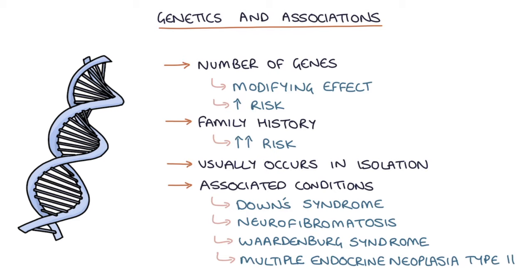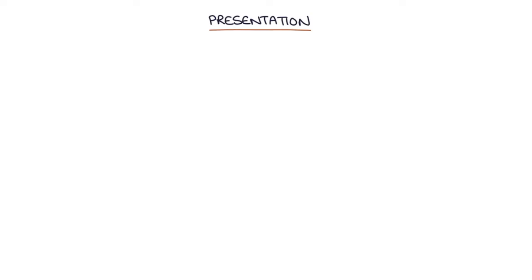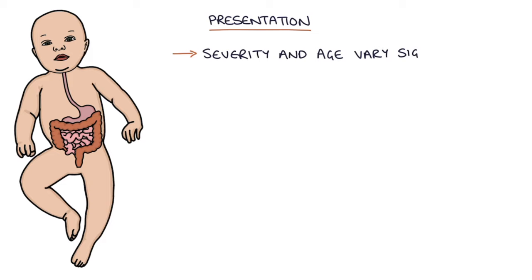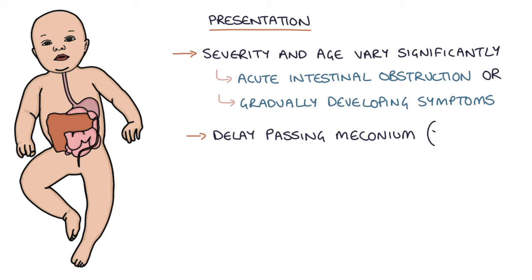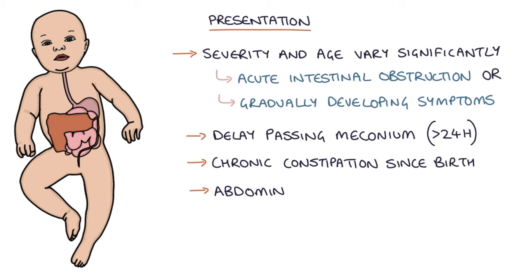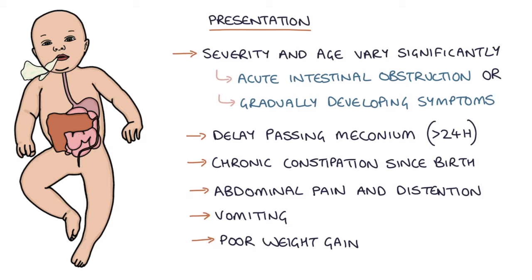The severity of presentation and the age at diagnosis vary significantly depending on the individual and the extent of the bowel affected. It can present with acute intestinal obstruction shortly after birth, or more gradually with a delay in passing meconium of more than 24 hours, chronic constipation since birth, abdominal pain and distension, vomiting, and poor weight gain and failure to thrive.